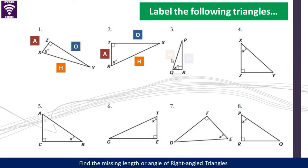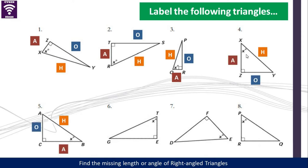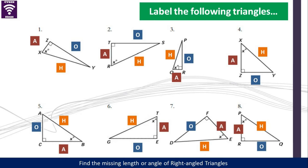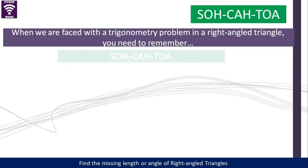So you start by identifying the hypotenuse of the triangle first, then you indicate the adjacent and the opposite. That's the fifth, the sixth, and finally the eighth. I believe you managed to identify the correct sides of these triangles.